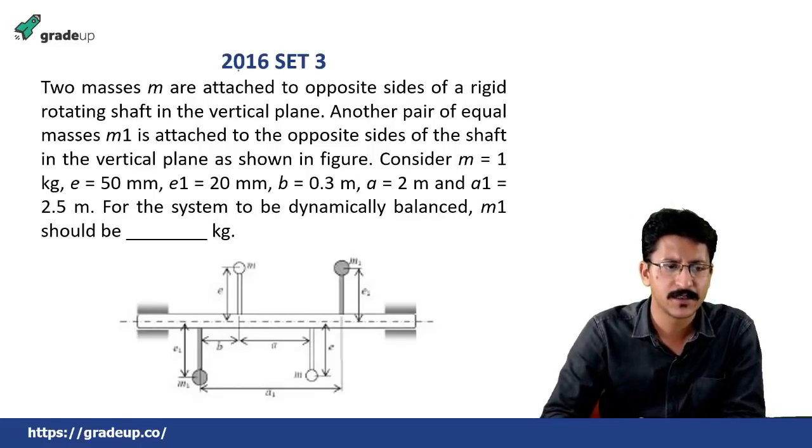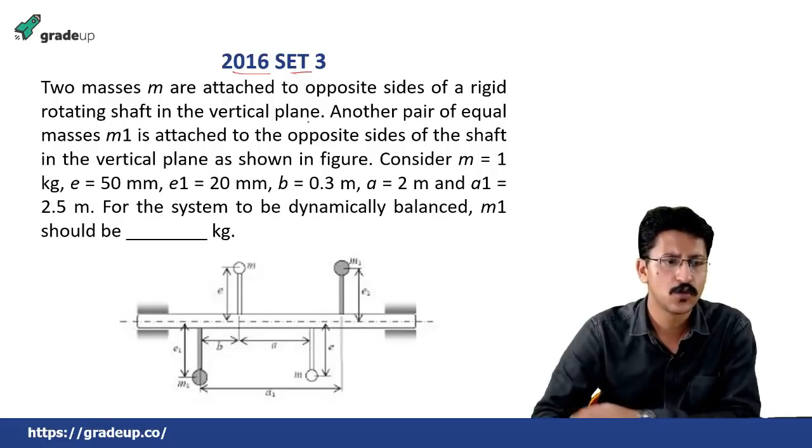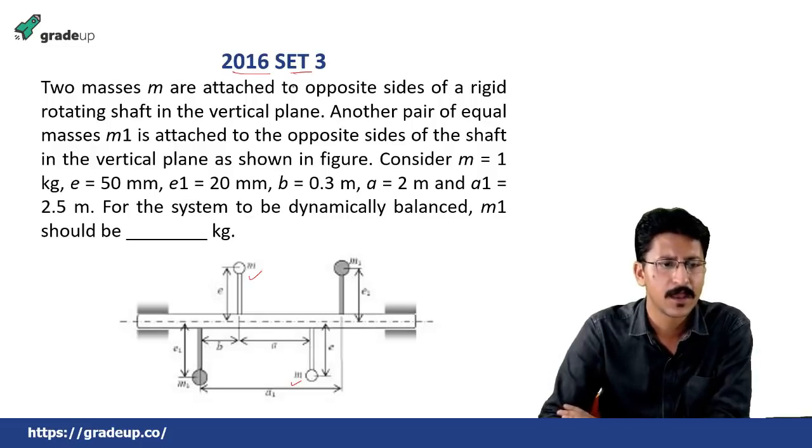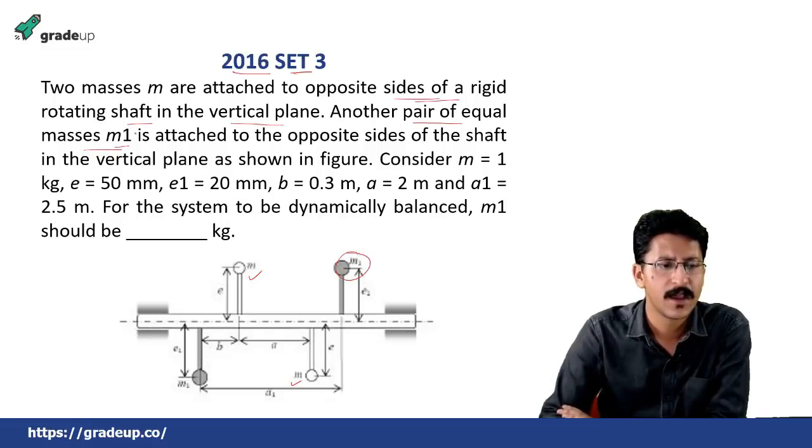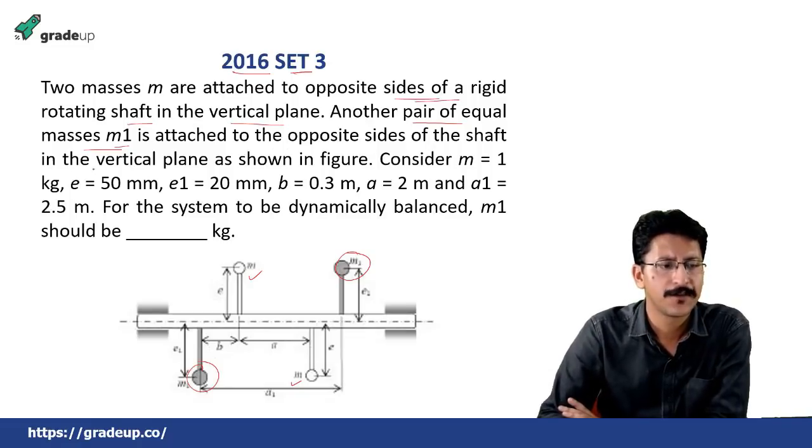So let us begin with balancing. The question asked in 2016 set 3. What the question says: two masses m, this is one m and this is another m, are attached to opposite sides of a rigid rotating shaft in a vertical plane. Another pair of equal masses m1, this is m1, is attached to the opposite sides. This is one m1, this is one m1 of the shaft in a vertical plane as shown in the figure.